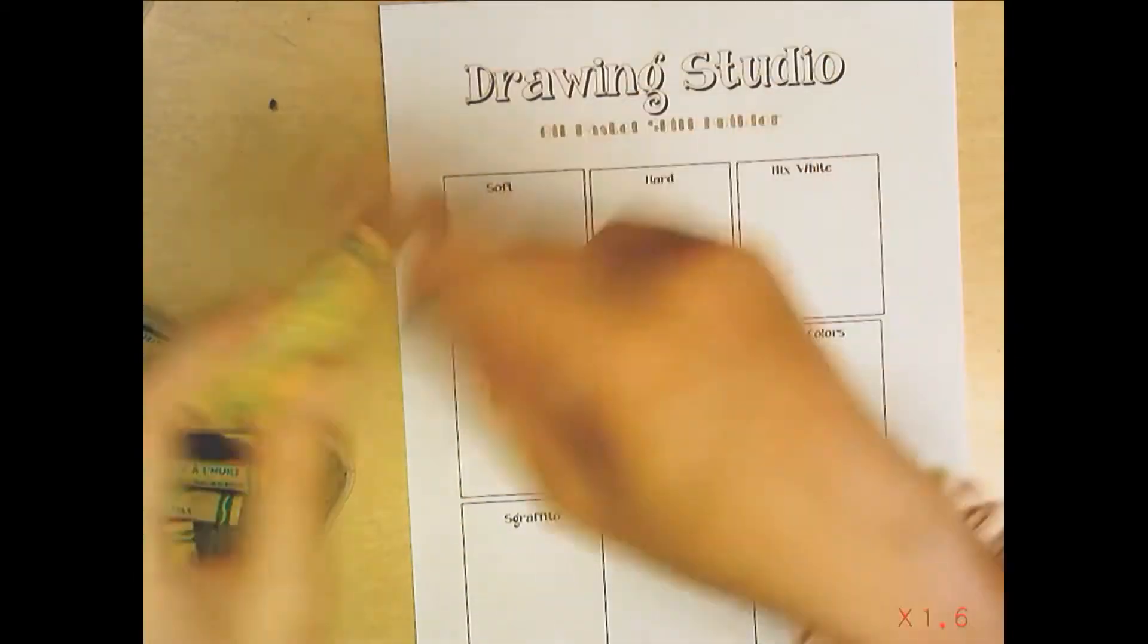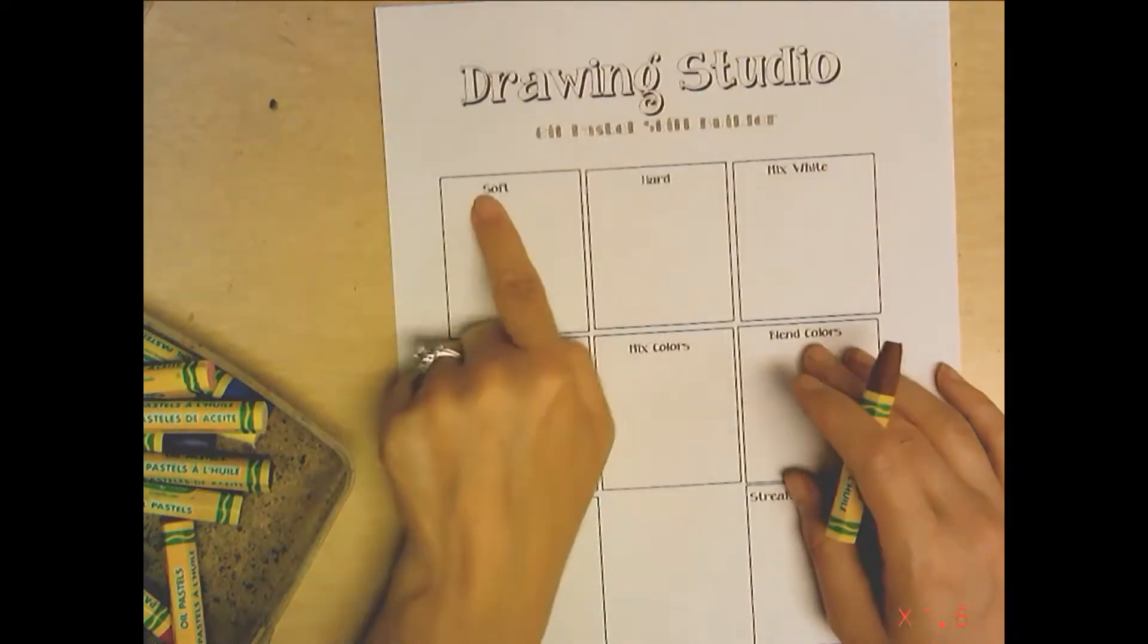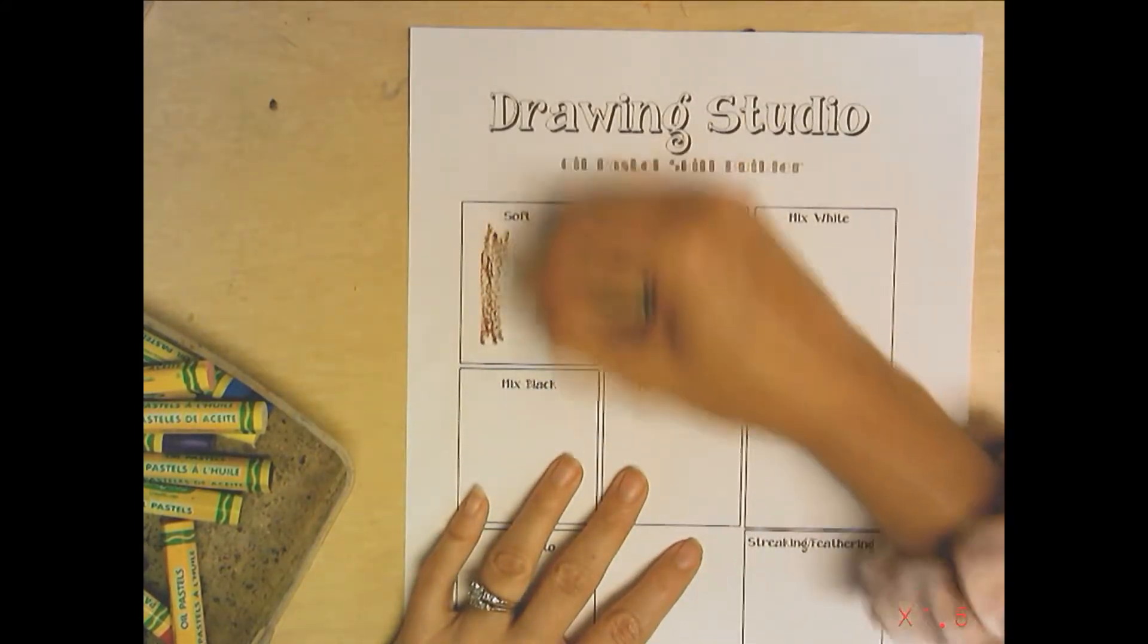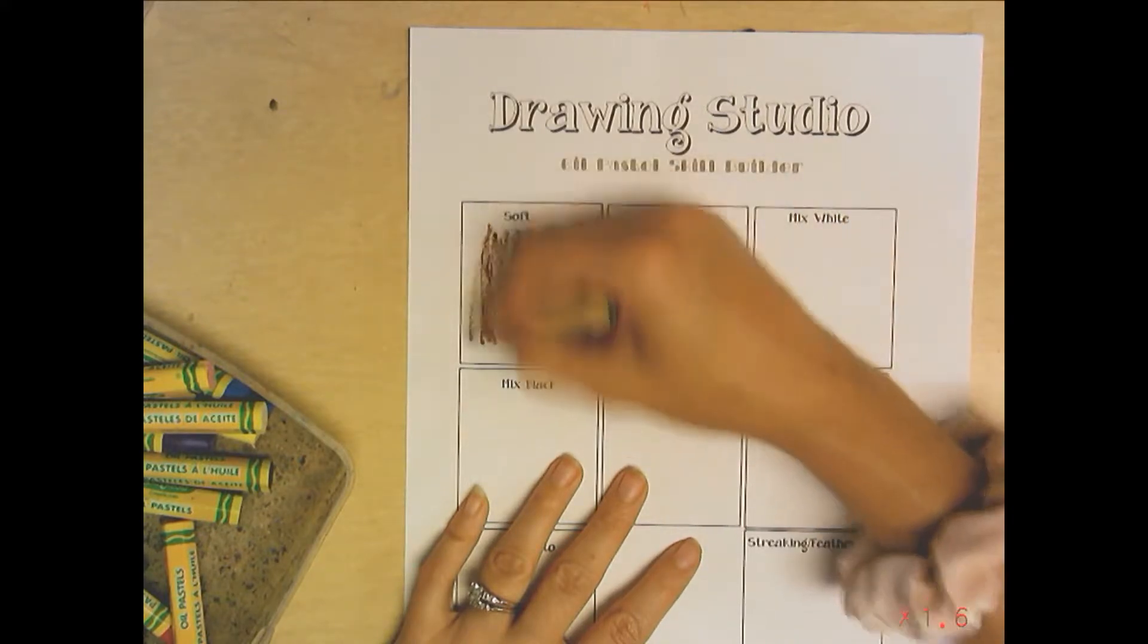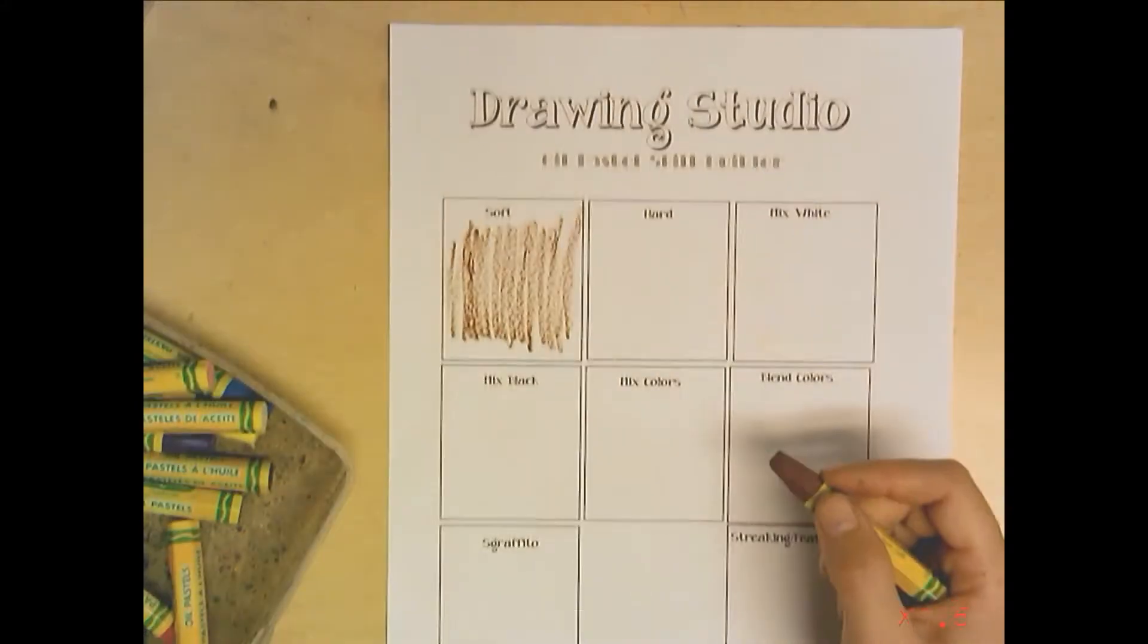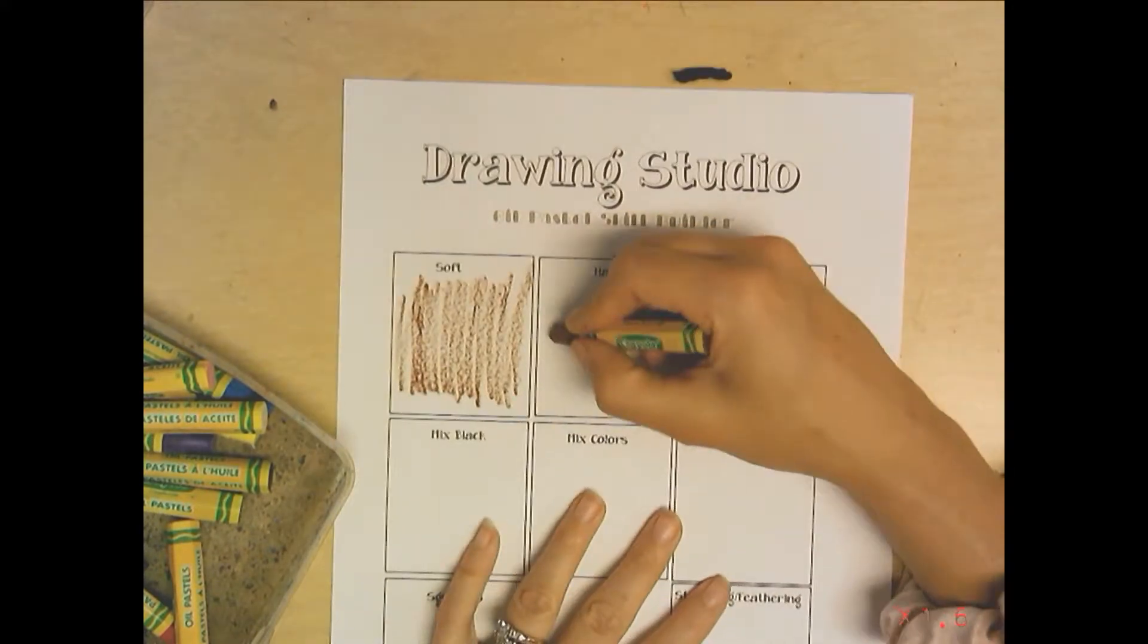Step one, color in soft. I want you to just kind of color in like you're coloring with a crayon, don't press down too hard. If you notice this looks pretty much like a crayon. Now let's color hard.